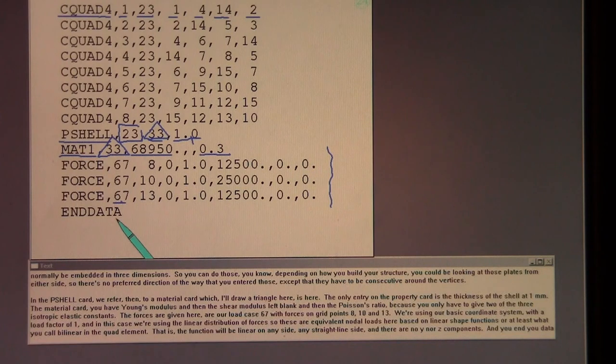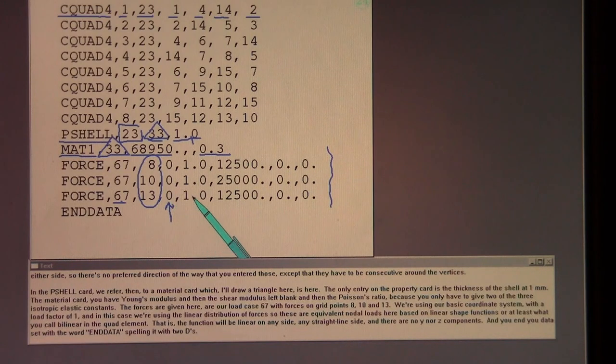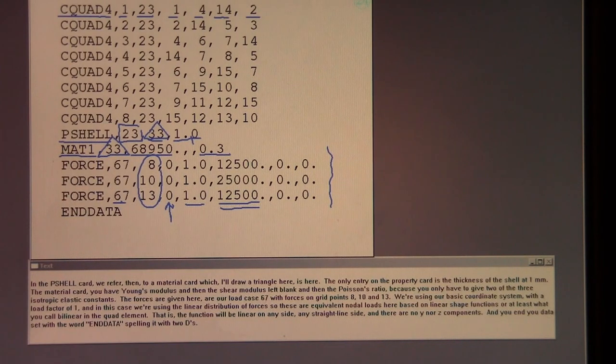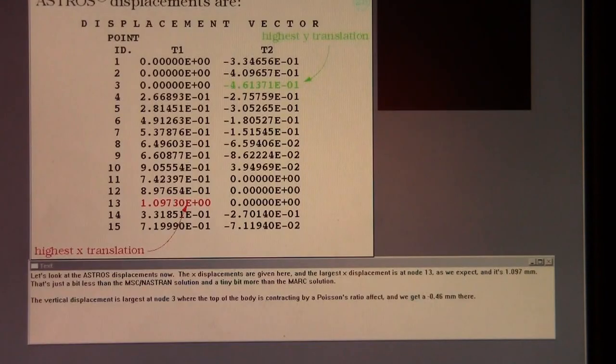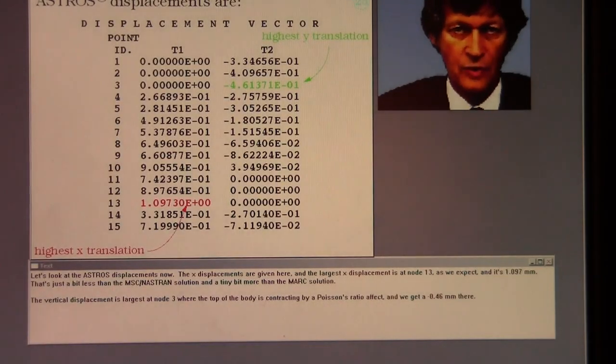We're using our basic coordinate system with a load factor of 1, and in this case, we're using the linear distribution of forces. So, these are equivalent nodal loads here, based on linear shape functions, or at least what you call bilinear in the quad element. That is, the function will be linear on any side, any straight line side. And there are no y nor z components. And you end your data set with the word end data, spelling it with two d's.